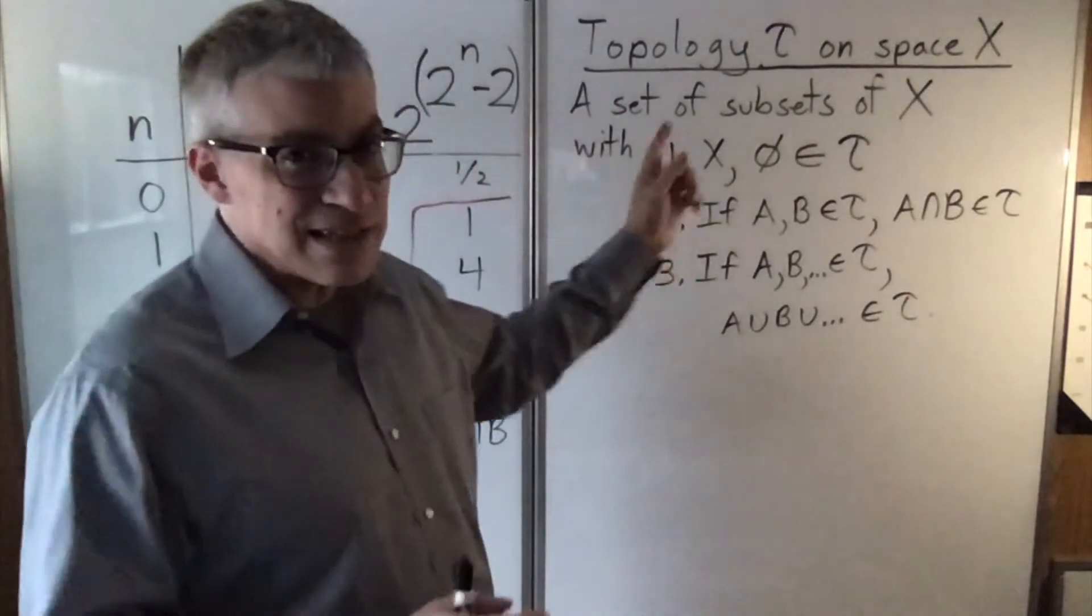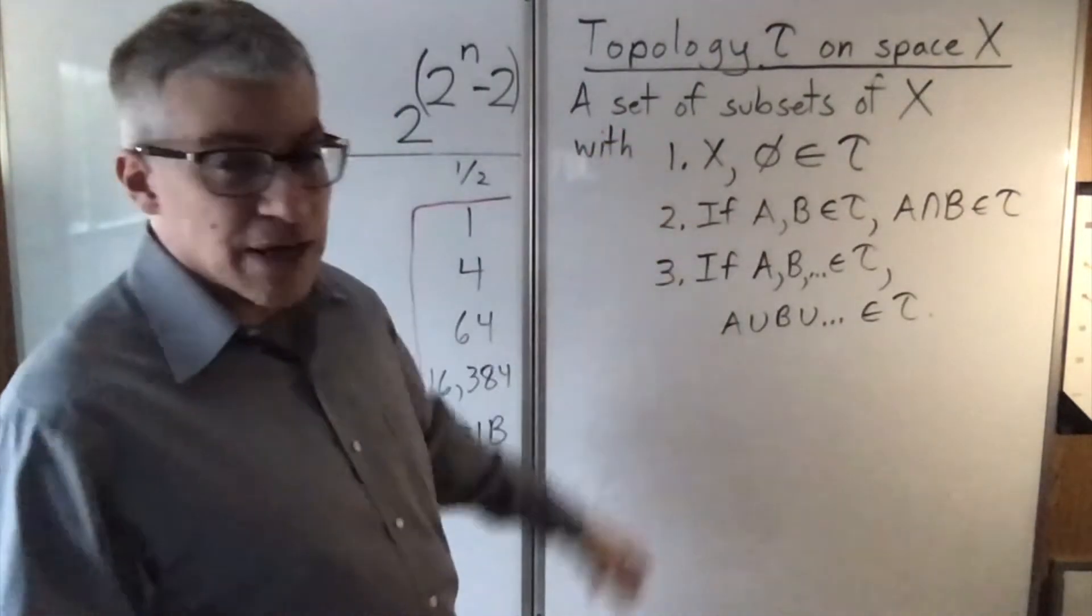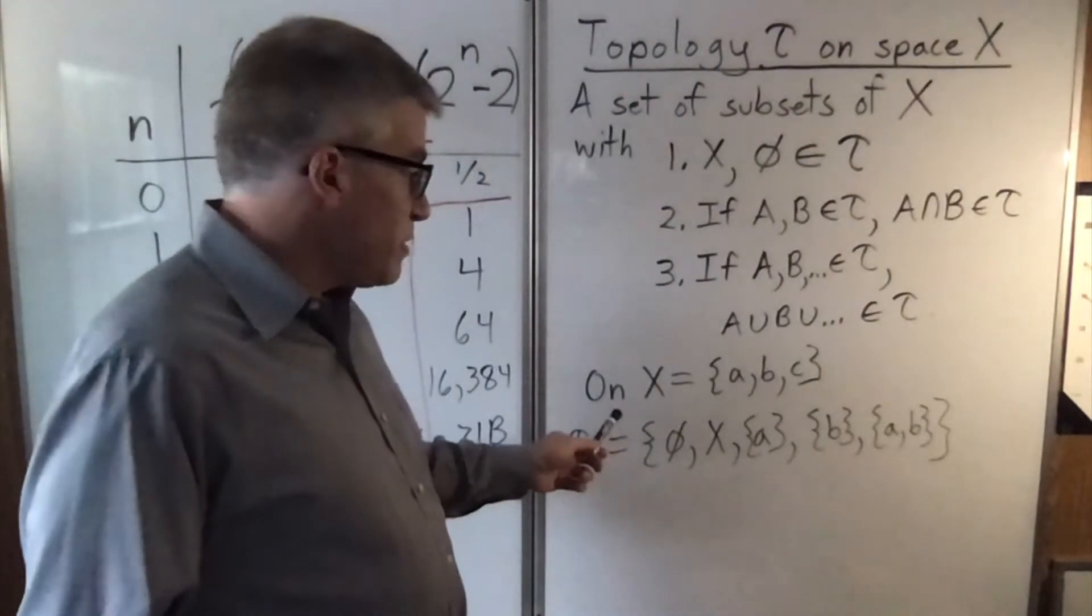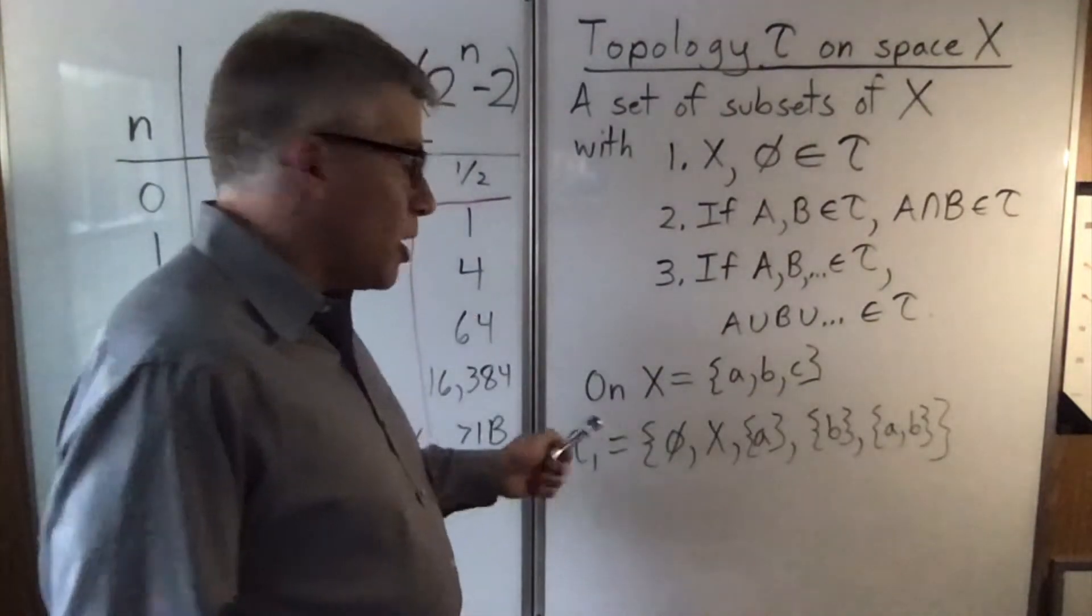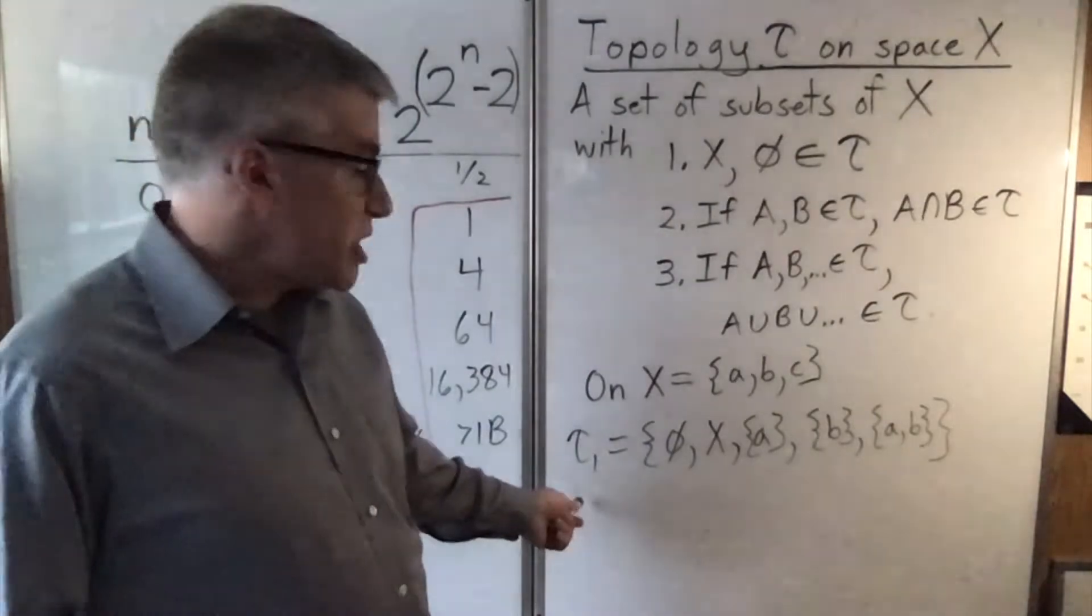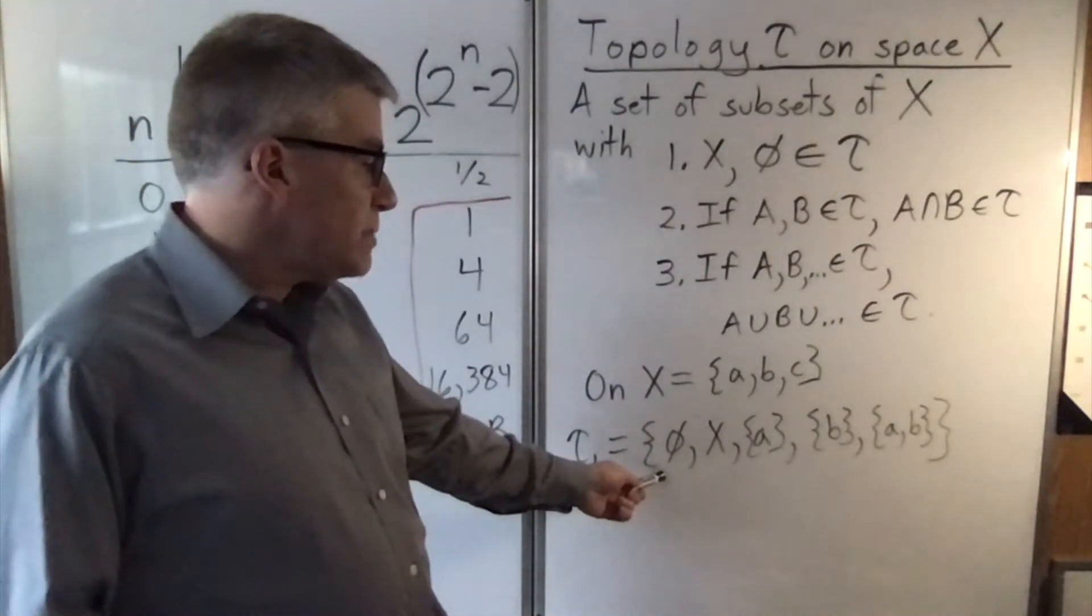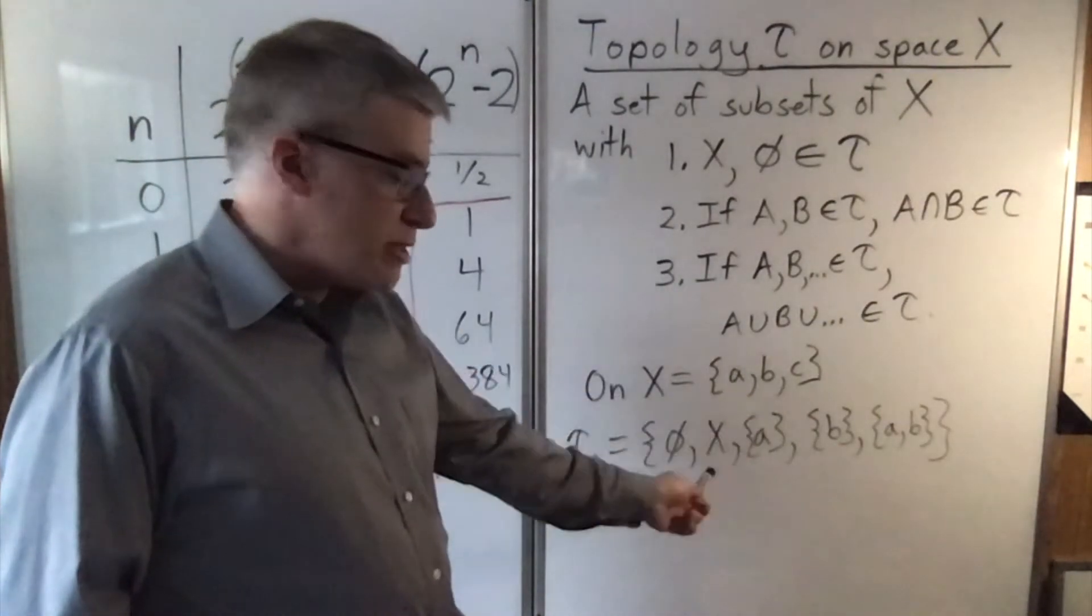The topology is a set of subsets that satisfy three rules. If you had a set of three points A, B, C, then one example of a topology is it has to include the empty set, it has to include the entire set A, B, C.